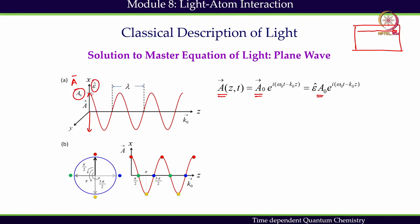That direction along which the vector potential is changing is called the polarization direction of light. The unit vector along that polarization direction is epsilon-cap. So the vector potential is changing along this polarization direction, but it is propagating through the medium in the propagation direction, which is given by the k₀ direction. That is the basic idea: when light propagates through the medium, we visualize it as a certain vector potential propagating through the medium.